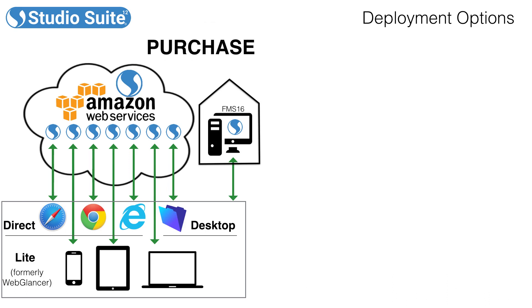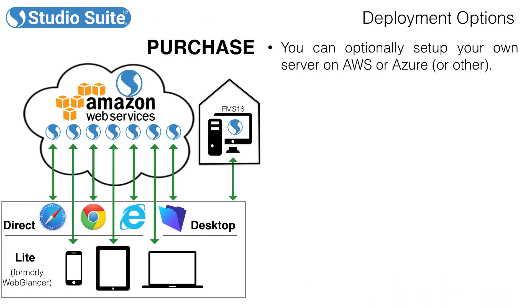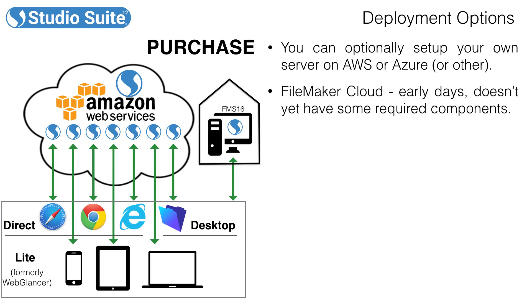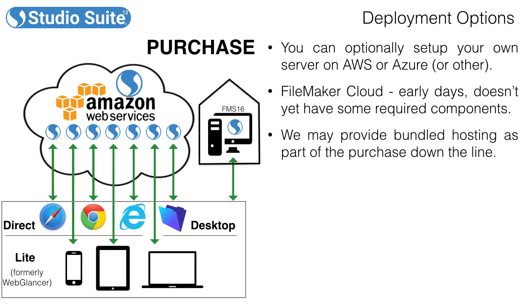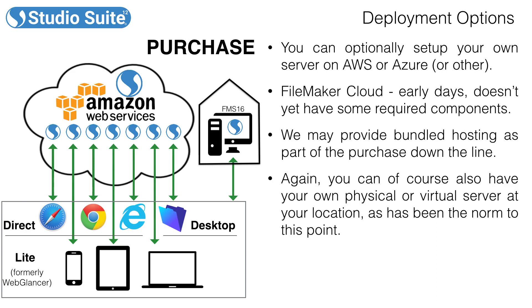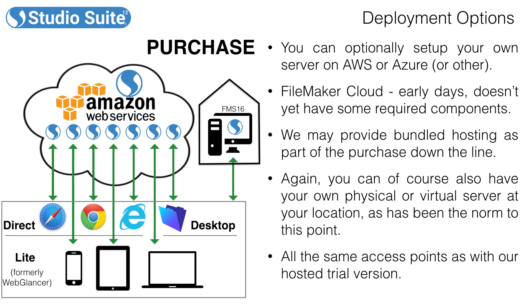To expand on that, when you purchase Studio Suite, you can set up your own server on AWS or Azure or any other hosting provider. Many people have asked us about FileMaker Cloud — it's still early days for that product. It still doesn't have some key components needed for Studio Suite 12, and FileMaker is just not ready at this stage. We may provide bundled hosting services as part of the purchase down the line, but we're not geared up to do that right now. Of course, you can set up your own physical or virtual server at your location as our customers have always done, which will provide all the same access points shown on this slide.